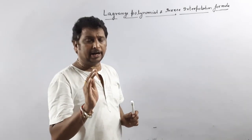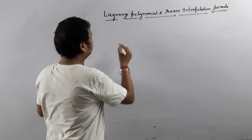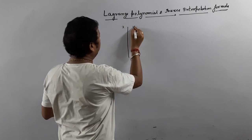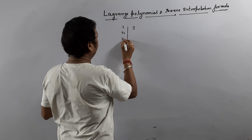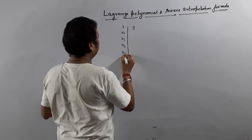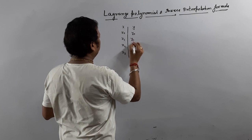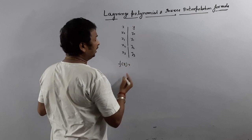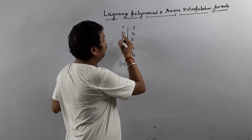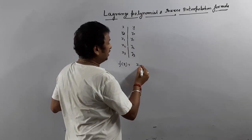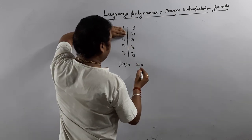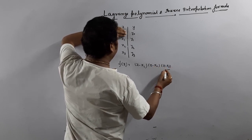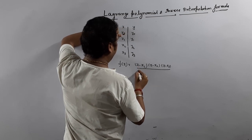You all know about Lagrange interpolation formula. So what is Lagrange interpolation formula? If we write x and y: x0, x1, x2, x3 and y is y0, y1, y2, y3. We know the Lagrange polynomial formula f(x). The interpolation formula is: first value we choose x0, so x minus x0 we keep closed. x minus x1, x minus x2, x minus x3, divided by — in place of x, we put x0.